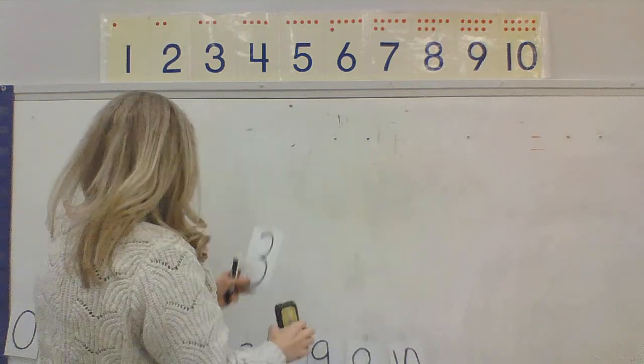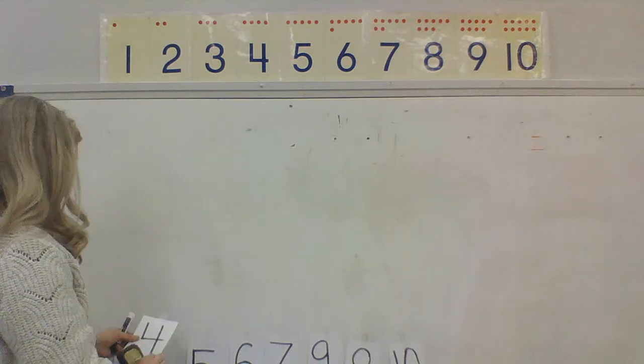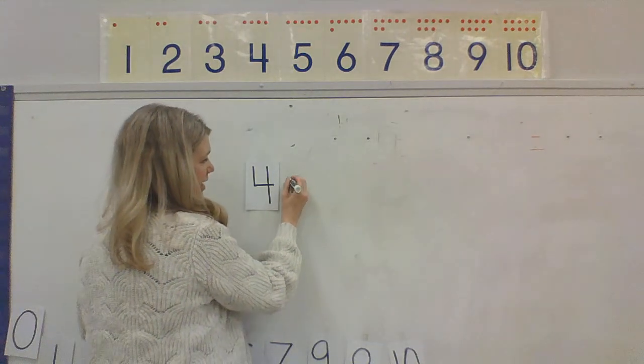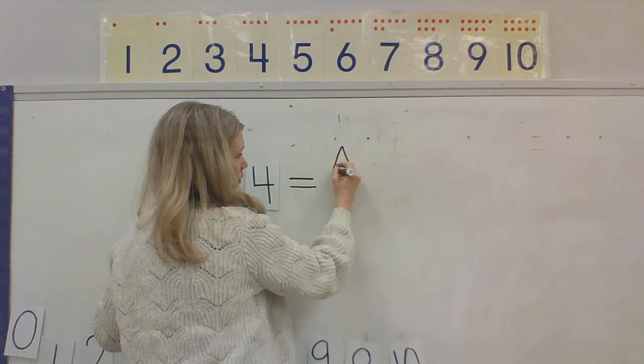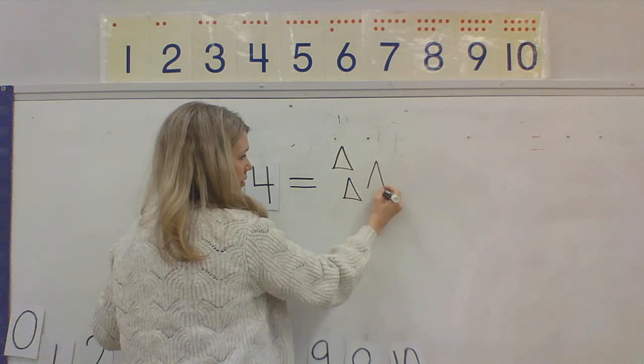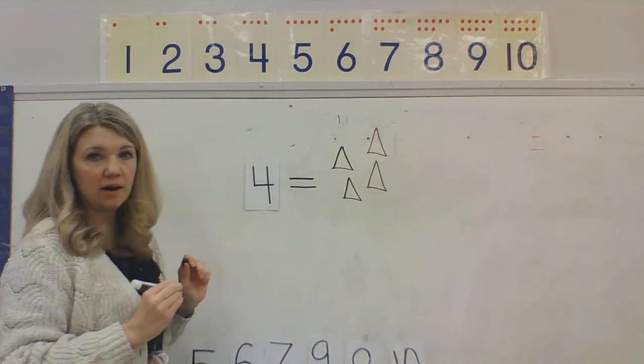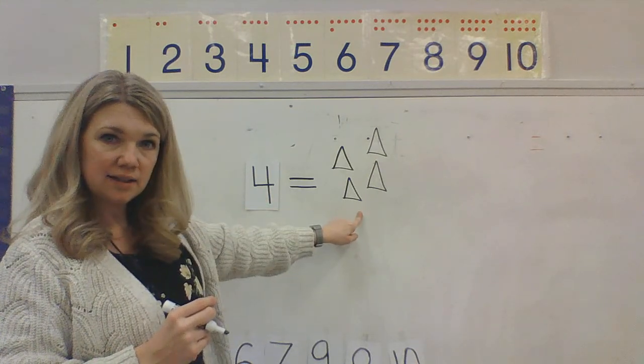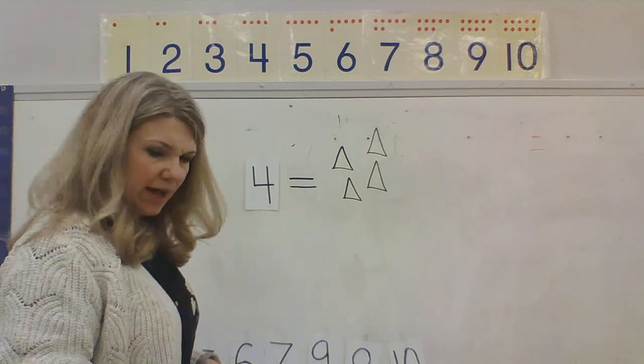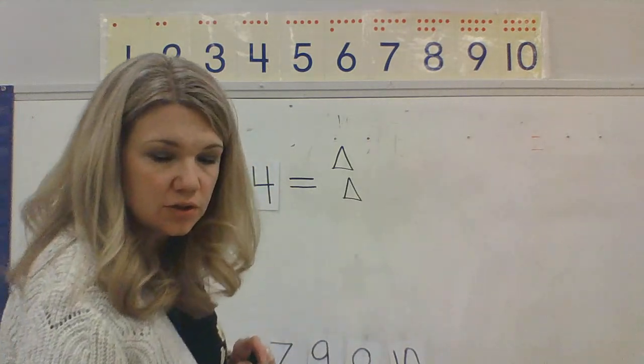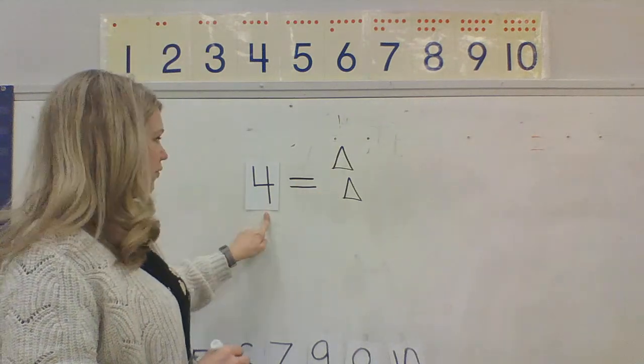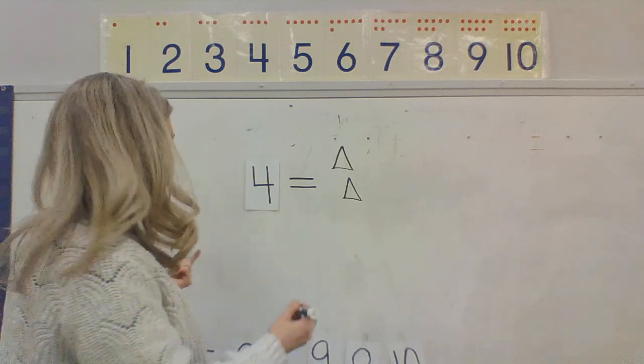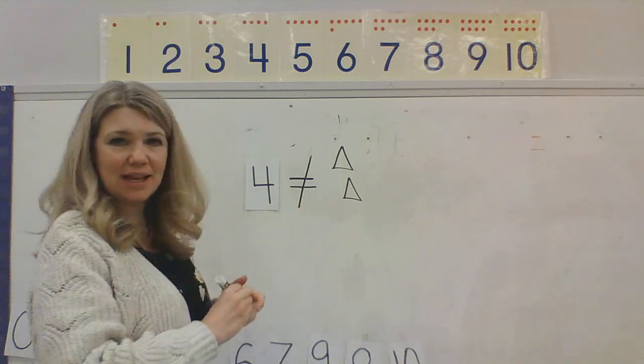Okay, let's look at another one. What if I have the number 4? If I have the number 4 and I say it is equal to 1, 2, 3, 4 triangles. Is 4 equal to 4 triangles? Yes, they are equal. But what if I only had 1, 2 triangles? Is 4 the same as or equal to 2 triangles? No, that is not the same. Not the same, not equal.